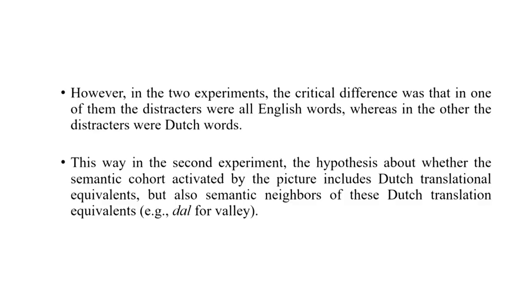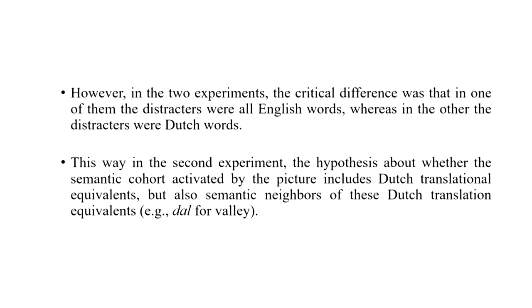This second experiment could test whether the semantic cohort activated by the picture actually includes Dutch translational equivalents and their semantic neighbors. The experiment with English distractors showed a facilitation effect of phonological distractors — for example, the word 'mouth' led to slightly faster naming in all four SOA conditions — suggesting that phonological encoding of the picture's name already starts during an early stage of lexical access. Semantic distractors showed an inhibitory effect as expected, except when the distractor followed the picture.